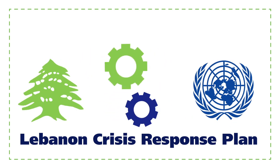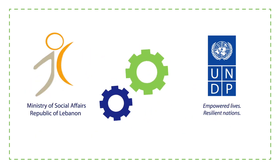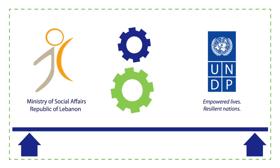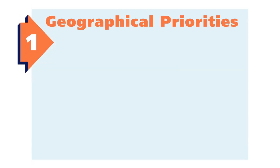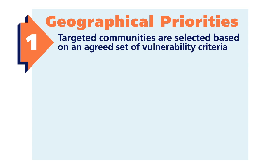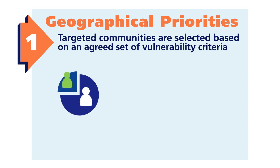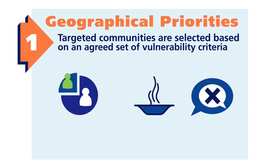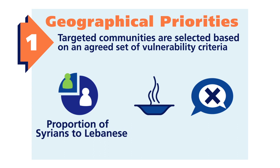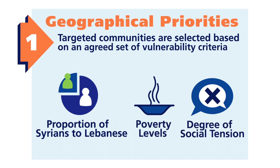The objective of the program is to provide direct assistance to the Lebanese communities who are most affected by the Syrian crisis. The first step is the identification of geographical priorities. Targeted communities are selected based on an agreed set of vulnerability criteria, which include proportion of Syrians to Lebanese, poverty levels and degree of social tension.